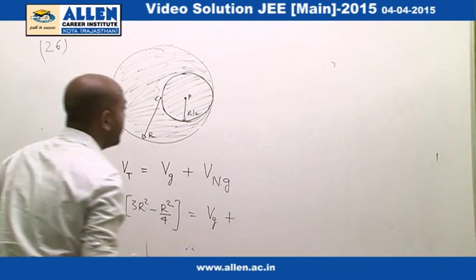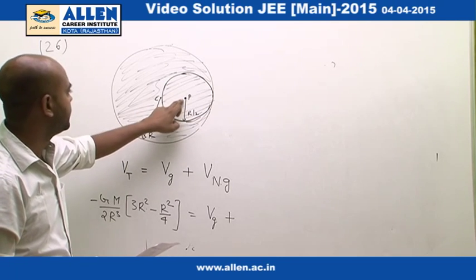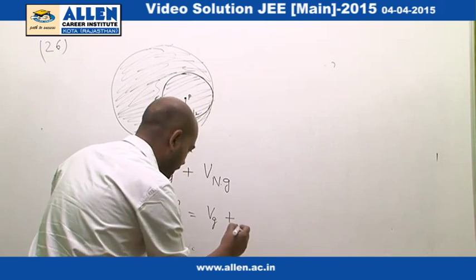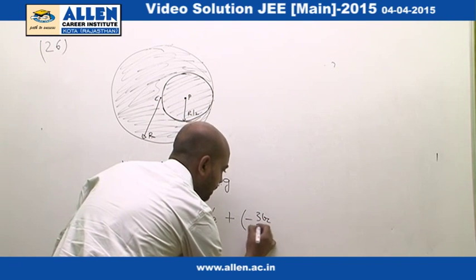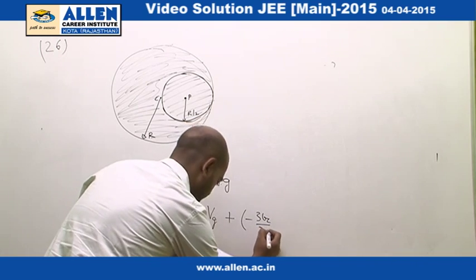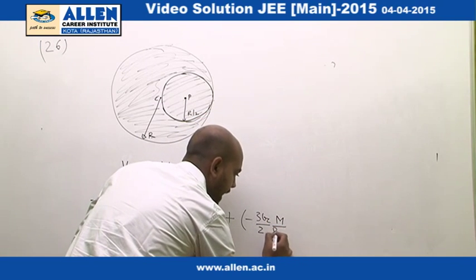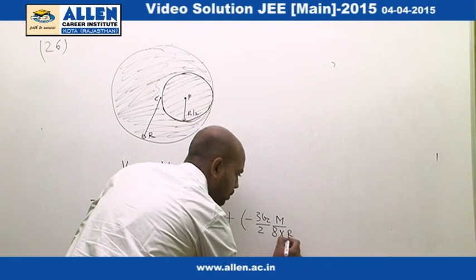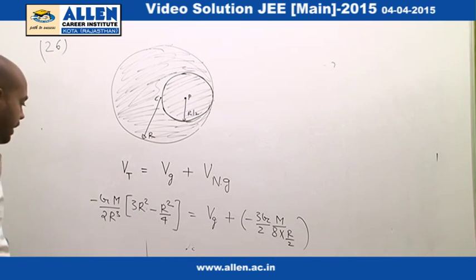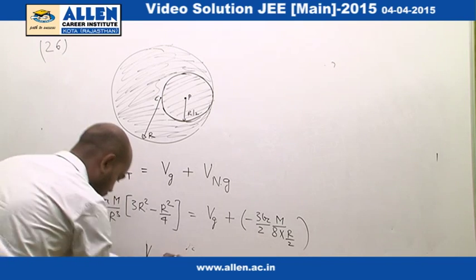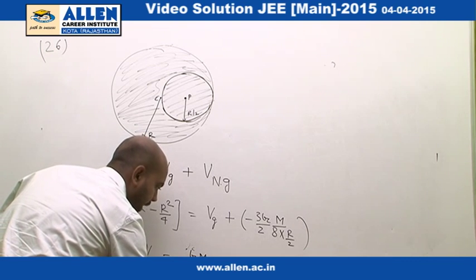V_not_given is the potential of the small filled cavity. We have to find the potential at that point using the same formula. The mass of this part will be M/8 and its radius would be r/2. Using the formula: minus 3G over 2 times M/8 over (r/2). By putting this together we get V_given = minus GM/r.